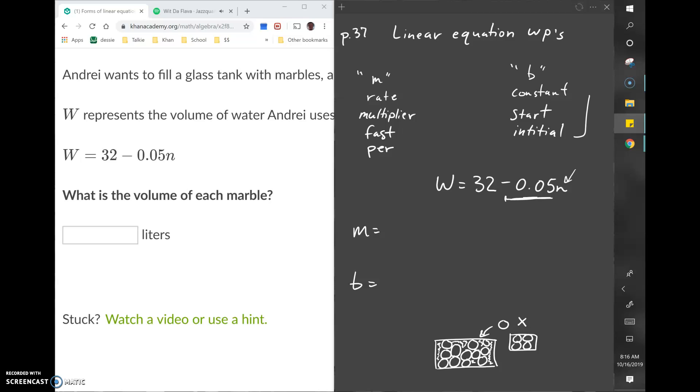This number is 0.05. Each time a marble is put into the tank, there is that amount of less space. That's why it's negative—because it's taking up space.